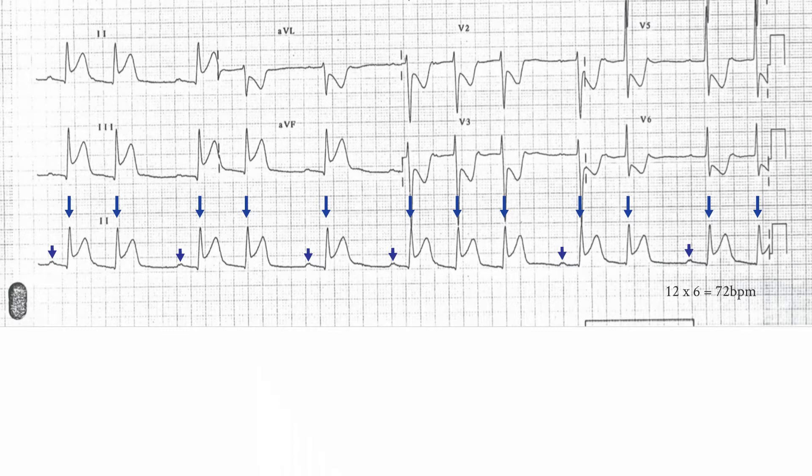There are also complexes that don't have an obvious P-wave preceding them. These are identical in morphology to the sinus beats and are therefore supraventricular beats and probably supraventricular ectopics. The rhythm is therefore probably sinus rhythm with supraventricular ectopics.